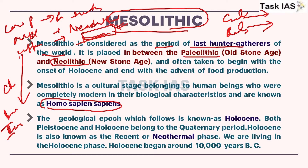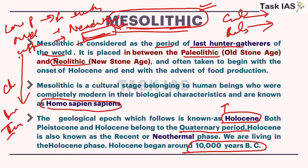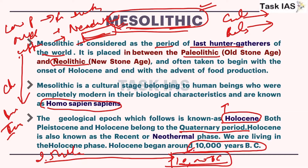When you complete your biological evolution part, you can write those biological features in prehistoric sections as well, so your answer will look more holistic. Mesolithic is a stage of cultural evolution, and its time period is the Holocene era under the Quaternary period, around 10,000 years BC. In Paleolithic we started around 2.5 million years ago, and now we have reached around 10,000 BC.